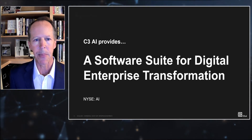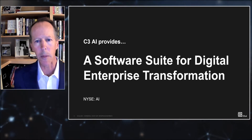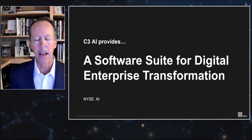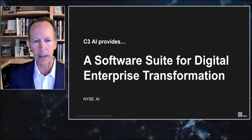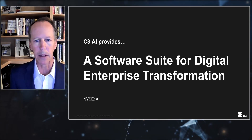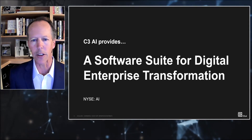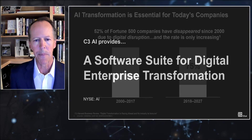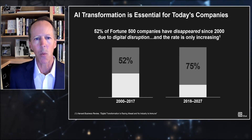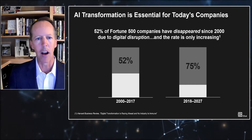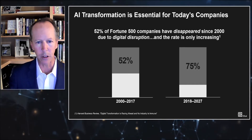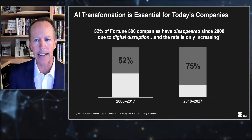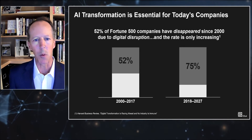A little about C3.ai: we are an enterprise software company in Silicon Valley, about 500 employees and growing. We just went public in December, traded on the NYSE under the symbol AI. We are focused on enterprises across all industries leveraging artificial intelligence and data science to improve their business performance.